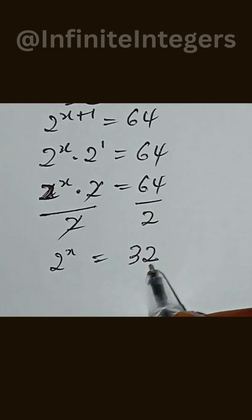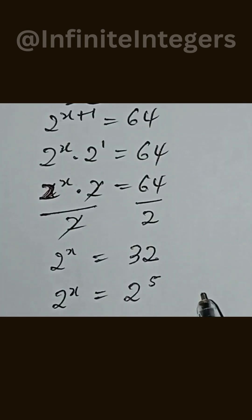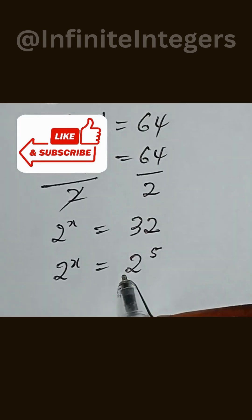Then we can put this 32 in base 2. So we have 2 to the power of x equal to 2 to the power of 5. Now we equate the exponents and we have x to be equal to 5.